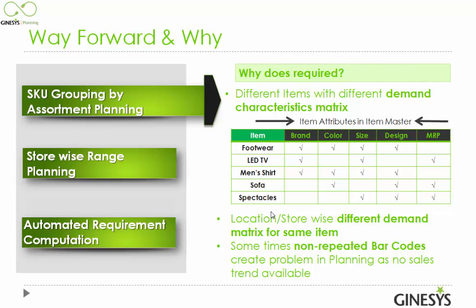There are different demand characteristics matrices available. For example, in the footwear segment, brand, color, size, and design are the factors contributing to demand. Similarly, in the LED electronics category, brand and size — such as 20-inch or 14-inch — are the key factors. So in different item categories there are different demand matrices. For a main shirt there is brand, color, size, and whether it is formal or casual.